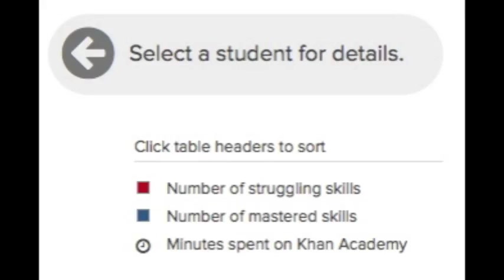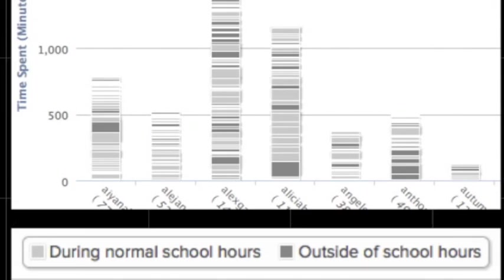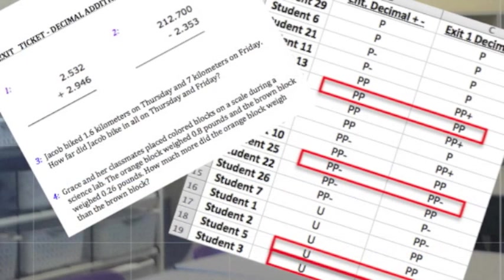Teachers can use the reports within their coaching tab to check student progress, including skills practiced, time spent, videos watched, and more. This data can be used to pull small groups and is also useful for student progress reports. Khan Academy is so beneficial for both low and high performing students that I assign 60 minutes per week as additional homework.